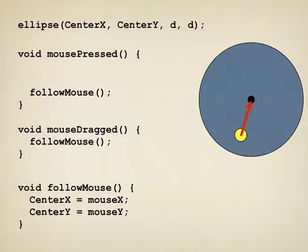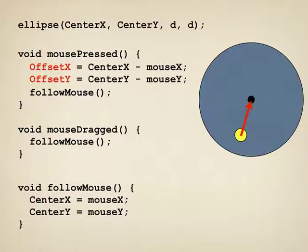I'll open up mouse pressed and compute two new floating point variables, offset X and offset Y. And they are just this arrow. Offset X is just the center X of the ellipse minus the current X location of the mouse, and offset Y is the same. In this slide, I'll assume that I've declared offset X and offset Y near the top of the program as variables of type float, even though I'm not showing it.